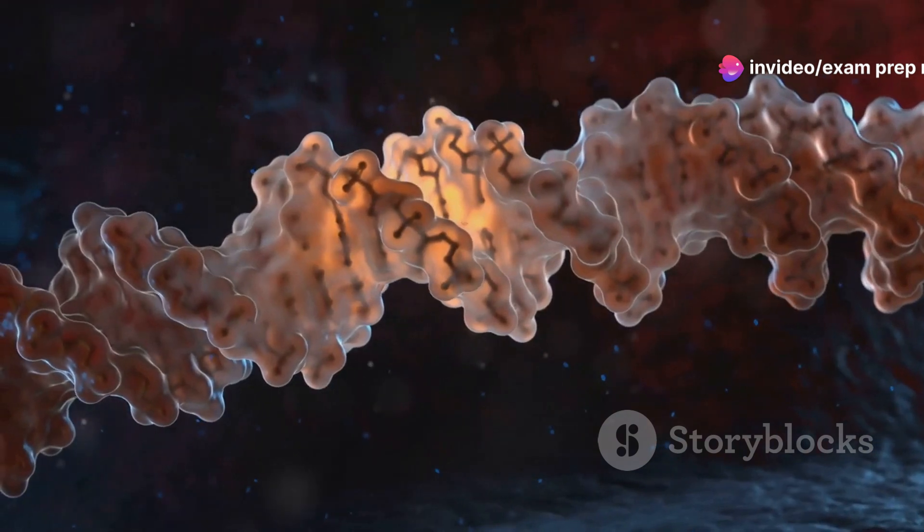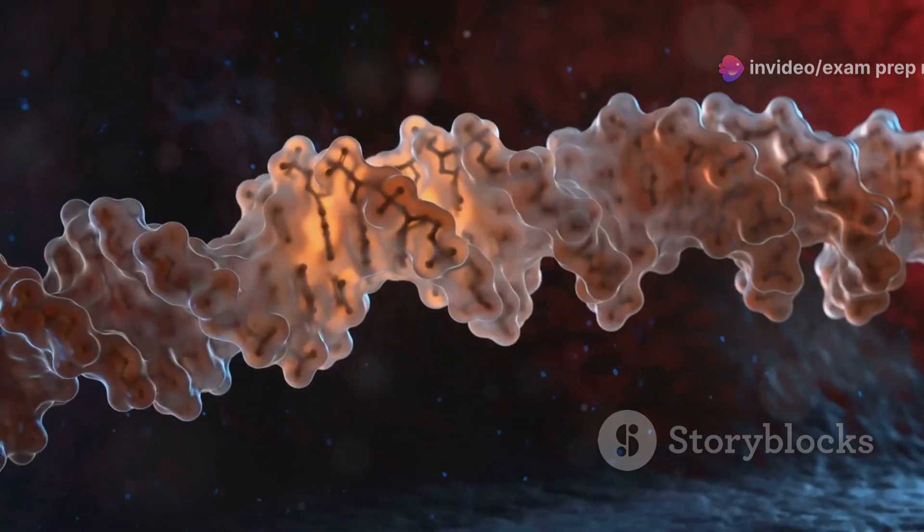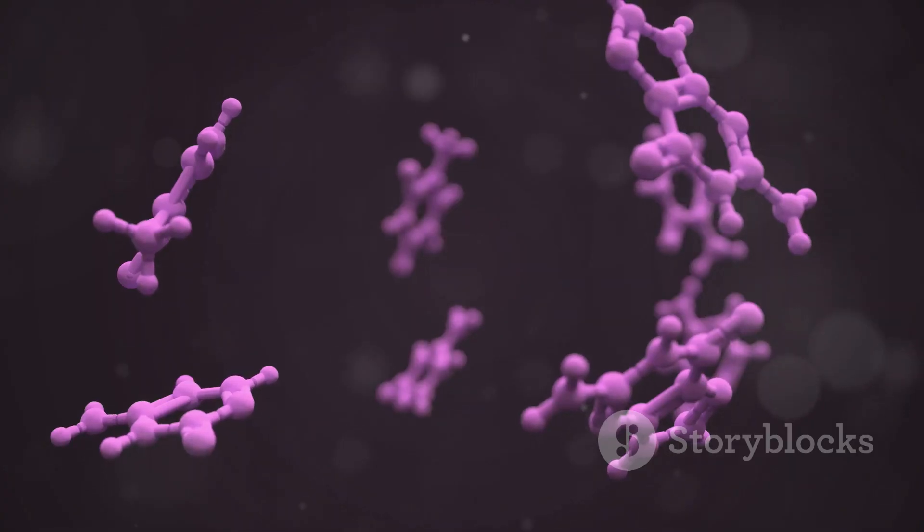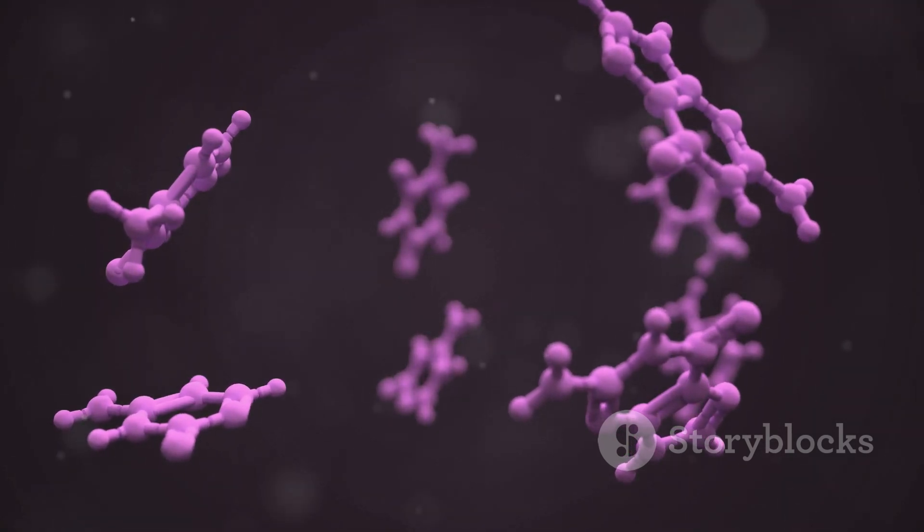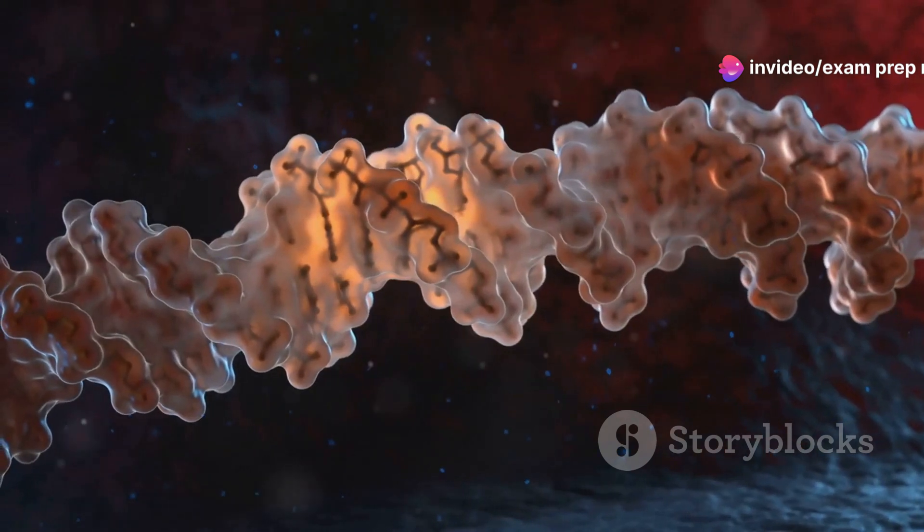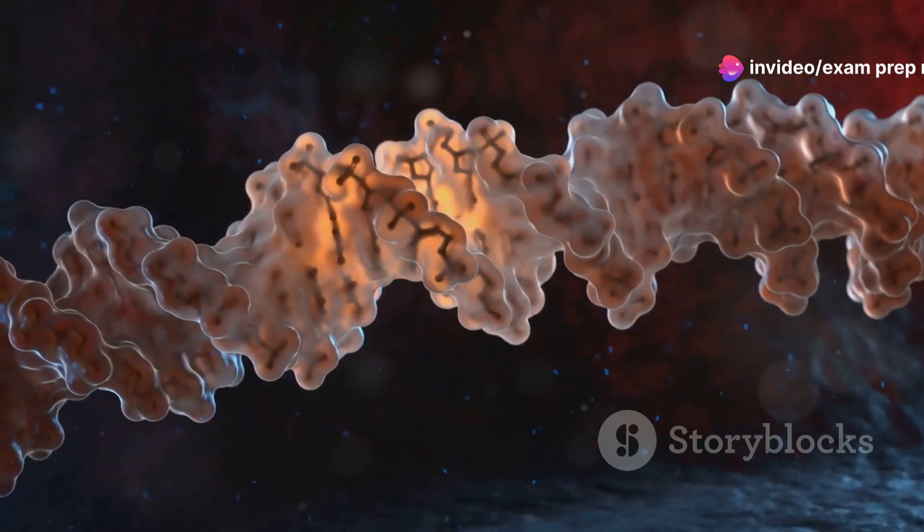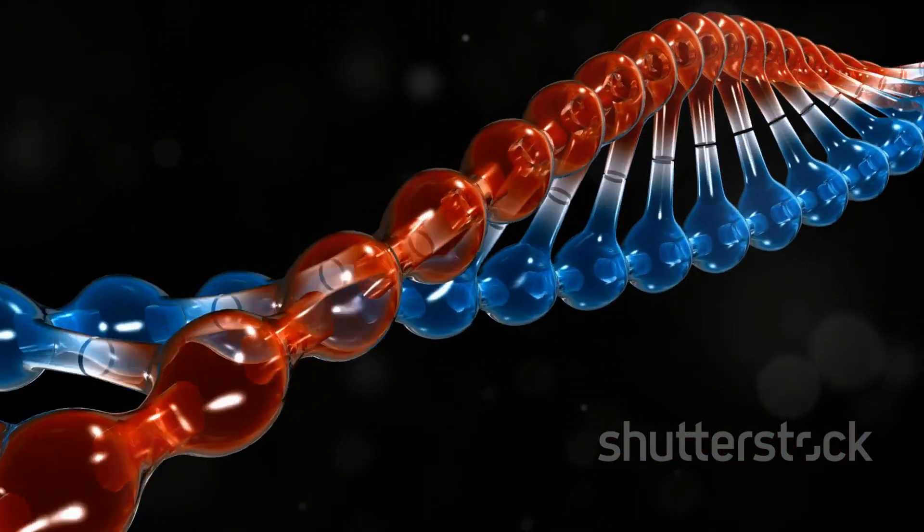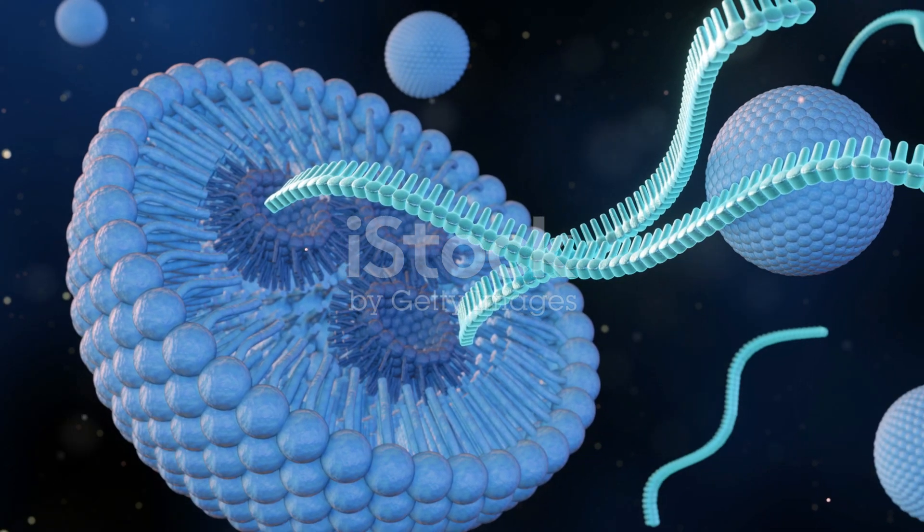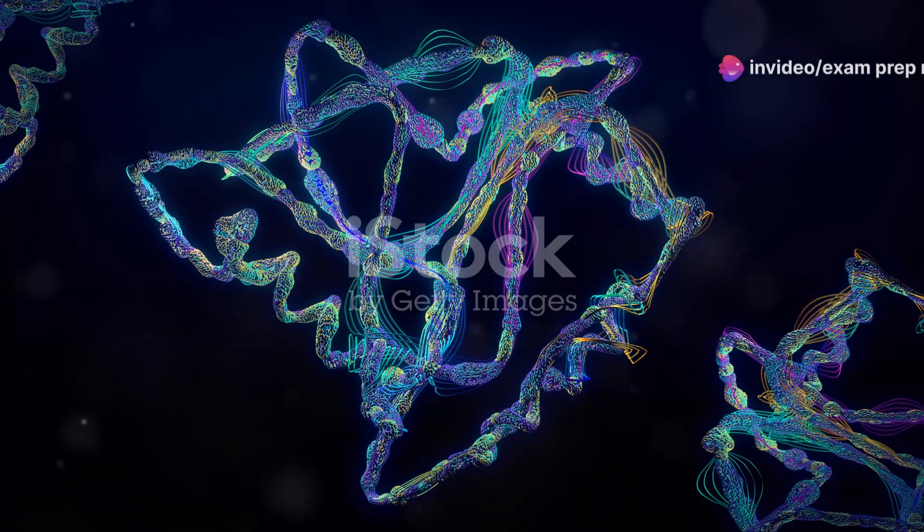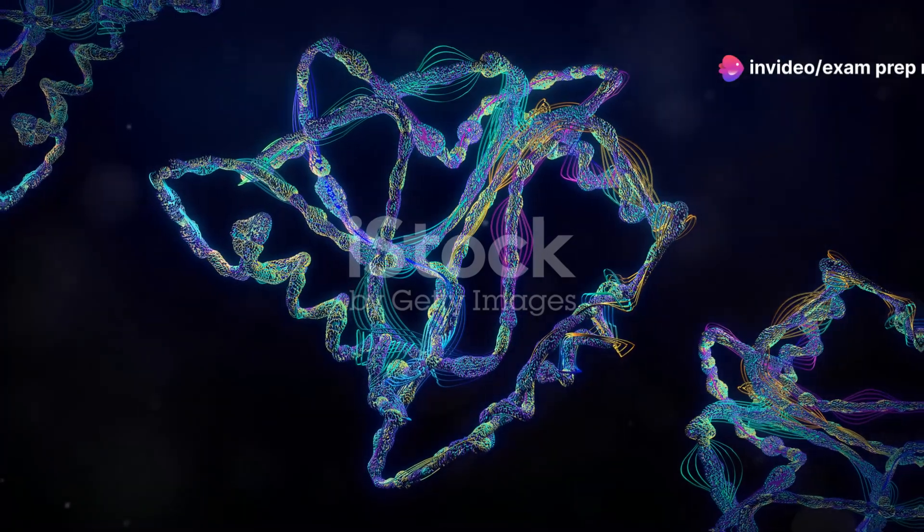Translation is where the genetic code is deciphered and used to build proteins. Ribosomes, the protein synthesis machinery of the cell, bind to the mRNA molecule. The ribosome reads the mRNA sequence codon by codon. Each codon, a sequence of three nucleotides, specifies a particular amino acid. Transfer RNA (tRNA) molecules, carrying specific amino acids, bring the correct amino acids to the ribosome based on the mRNA codon.